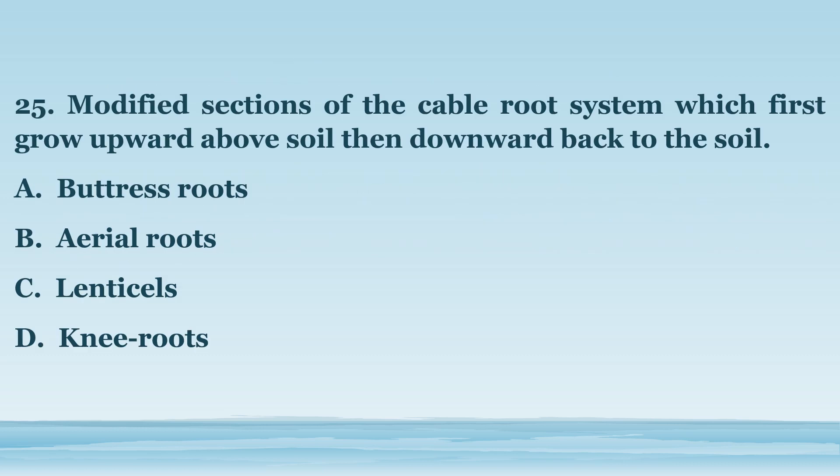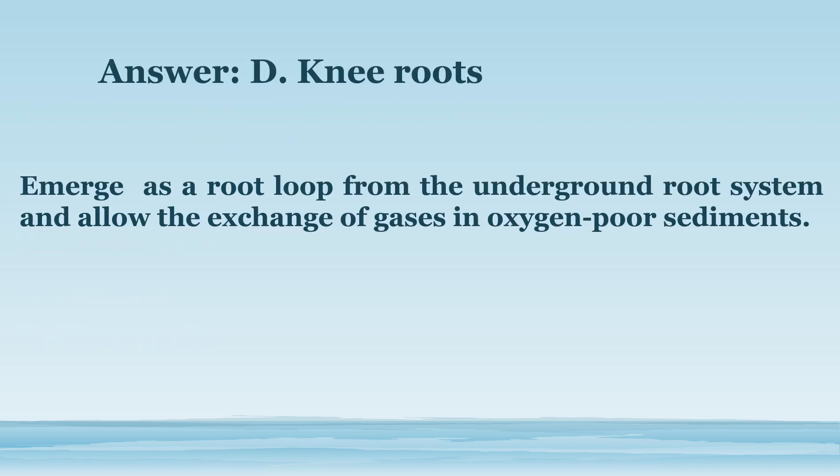Number 25. Modified sections of the cable root system, which first grow upward above soil, then downward back to the soil. A. Buttress roots. B. Aerial roots. C. Lenticels. D. Knee roots. The answer is letter D. Knee roots. Emerge as a root loop from the underground root system and allow the exchange of gases in oxygen-poor sediments.